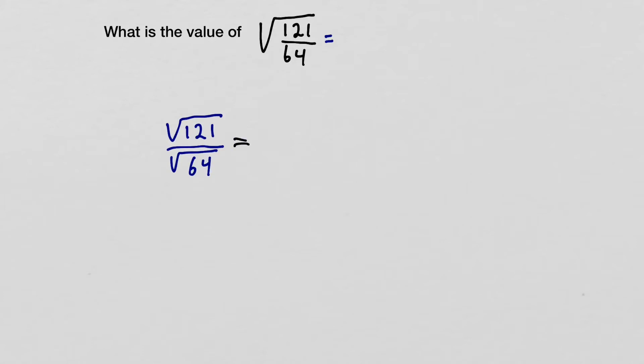Now we need to find two identical numbers that multiply together to give us 121. That's what a square root tells us to do. We know that 11 times 11 is 121, so the square root of 121 is 11.